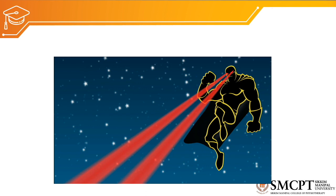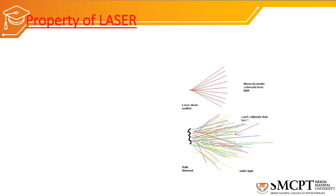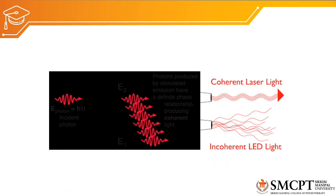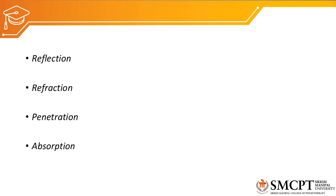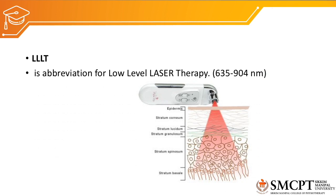In summary, LASER stands for Light Amplification by Stimulated Emission of Radiation. Its three unique properties are: monochromaticity (single wavelength), coherence (same phase and direction), and collimation (waves parallel to each other). Additional properties shared with ordinary light include reflection, refraction, penetration, and absorption. LLLT — low-level laser therapy — ranges from 635 to 904 nanometers.